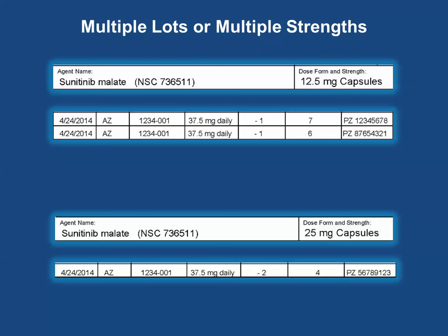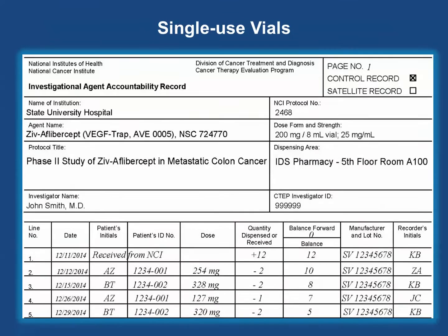Now we've finished reviewing examples on the oral DARF. Next, we'll review examples specific to injectable agent accountability on the original NCI DARF. Keep in mind all applicable agent dispensing procedures from the oral DARF examples. When dispensing injectable agents on the original NCI DARF, often the dose dispensed is intended for a single administration. If the dose requires calculations — for example, mg per meter squared — record it as the total dose dispensed. Verify the calculations and any dose rounding procedures by referring to the protocol.